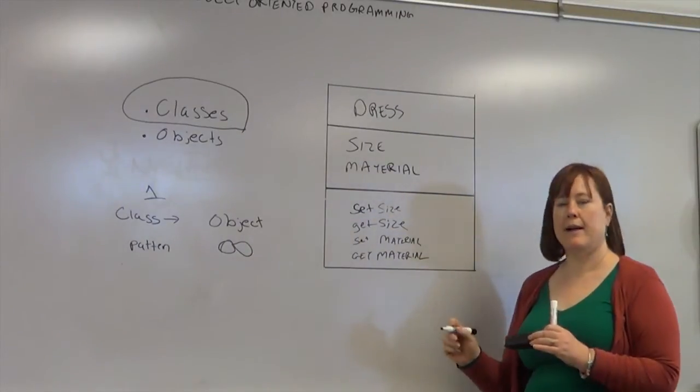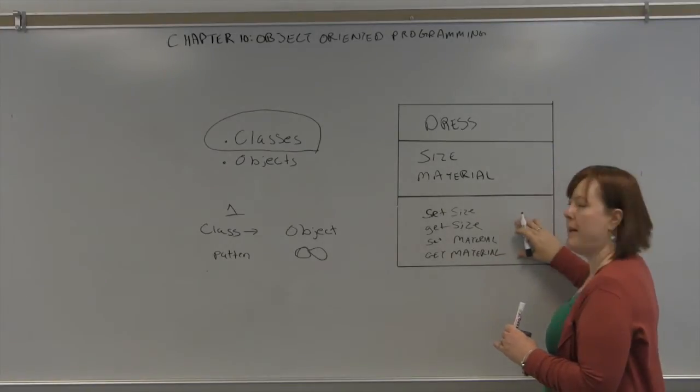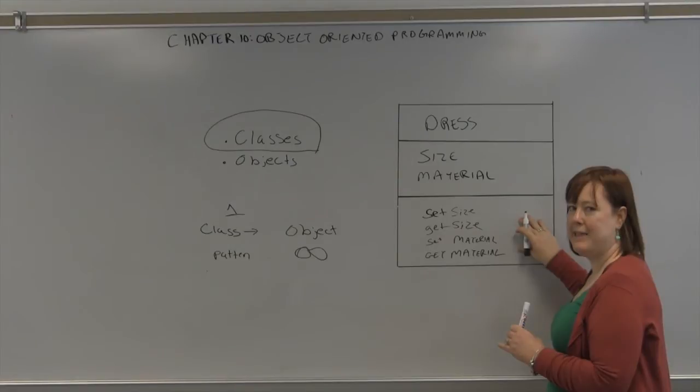So when working with a class, this is the name. These are the attributes. These are the methods. Methods are what it can do.